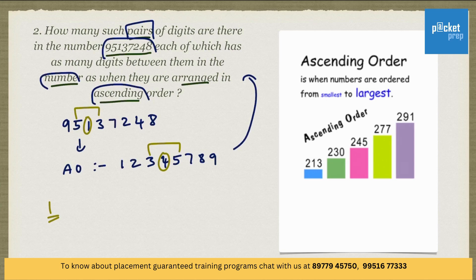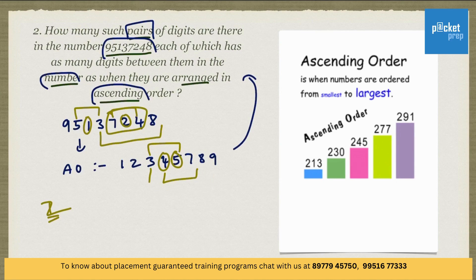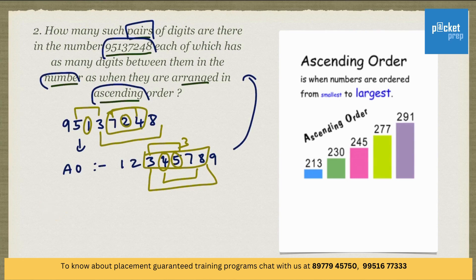Let's check if there are any more. The number of digits between 7 and 4 in the original sequence is 1, and between 4 and 7 in the ascending order is also 1. So, we have 2 pairs satisfying the given condition. The number of digits between 3 and 8 in the original sequence is 3, and the number of digits between 3 and 8 in the ascending order is also 3. So, we have 3 pairs satisfying the given condition in total.